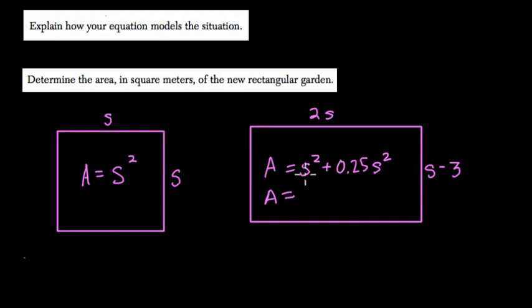And if you think about that, it's like having one group of S squared plus 0.25 groups of S squared. So if we add one group and 0.25 groups, that's 1.25 S squared. So that's our new area.